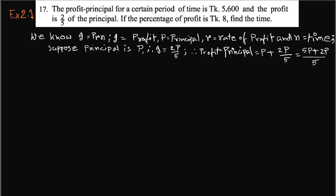Assalamualaikum, greetings from Talent Upscale. Class 8 English version, math exercise 2.1, number 17. The profit plus principal for a certain period of time is taka 5600, and the profit is two-fifths of the principal. If the percentage of profit is 8%, find the time.